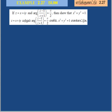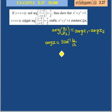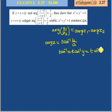The formula we use is: argument of Z1 divided by Z2 equals argument of Z1 minus argument of Z2. Also, argument of Z equals tan inverse of Y/X. And the third formula: tan inverse of X minus tan inverse of Y equals tan inverse of (X minus Y)/(1 plus XY).